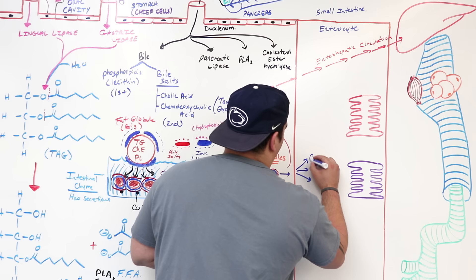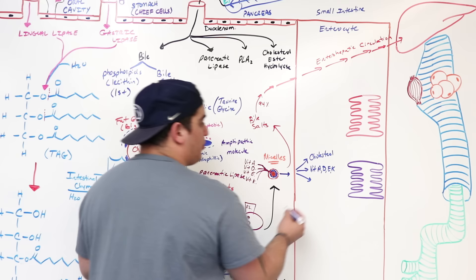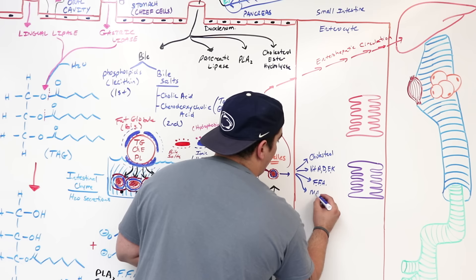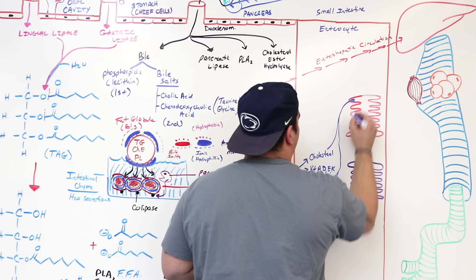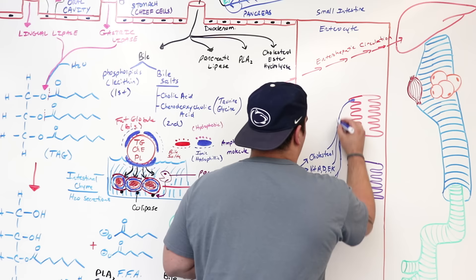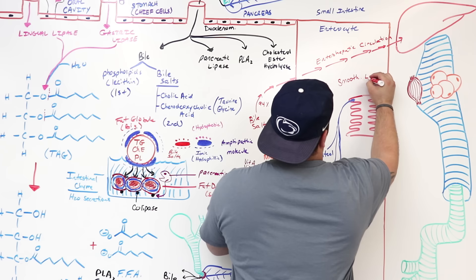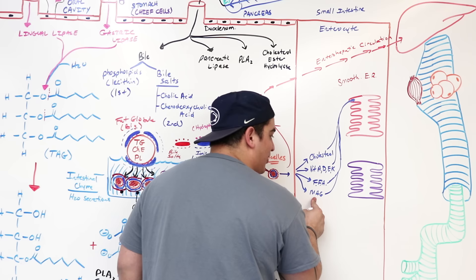What gets released into the enterocyte includes cholesterol, fat-soluble vitamins A, D, E, and K, free fatty acids, and monoacylglycerols. These substances are going to be taken to a specific area called the smooth endoplasmic reticulum.